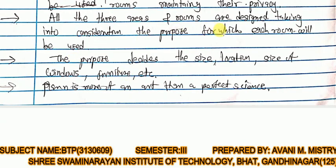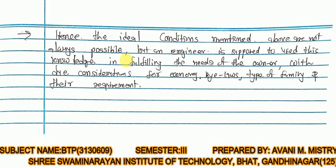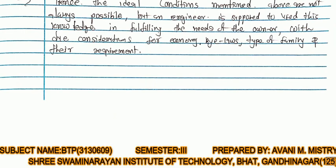All three areas and rooms are designed taking into consideration the purpose for which each room will be used. The purpose decides the size, location, size of windows, furniture, etc. The plan is more of an art than a perfect science; hence the ideal conditions mentioned are not always possible, but an engineer is expected to use this knowledge while fulfilling the needs of the owner, considering economy, bylaws, type of family, and their requirements.